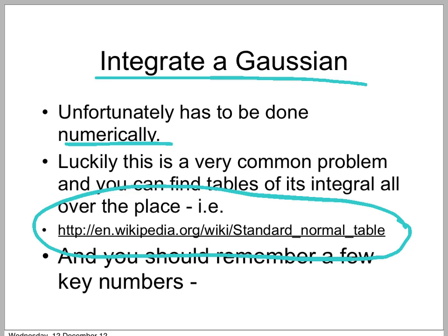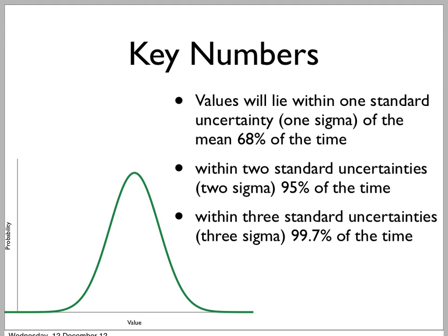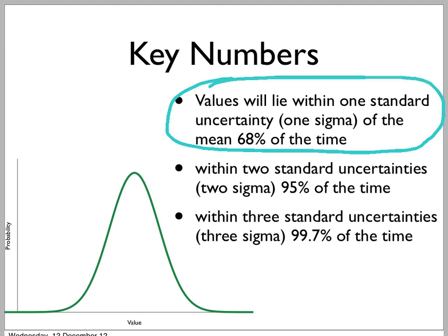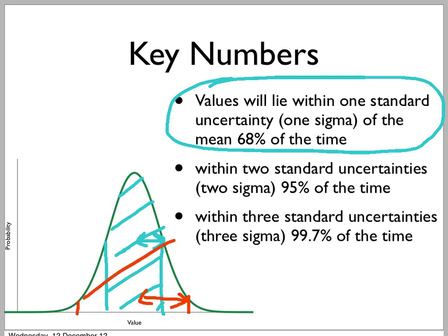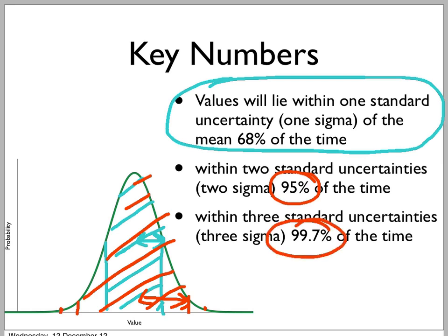In the real world, often all you need is to remember a few key values. The integral of the area within one standard deviation — one sigma of the mean — is 68%. If you go to two standard deviations, two sigma, that's 95% of the time. And for three standard deviations, you're getting right out into the wings, and you've got 99.7% of the time. Those three numbers will be enough to get you through most problems.